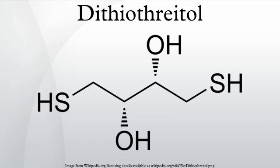The reduction of a typical disulfide bond proceeds by two sequential thiol-disulfide exchange reactions, as illustrated below. The reduction usually does not stop at the mixed disulfide species because the second thiol of DTT has a high propensity to close the ring, forming oxidized DTT and leaving behind a reduced disulfide bond.